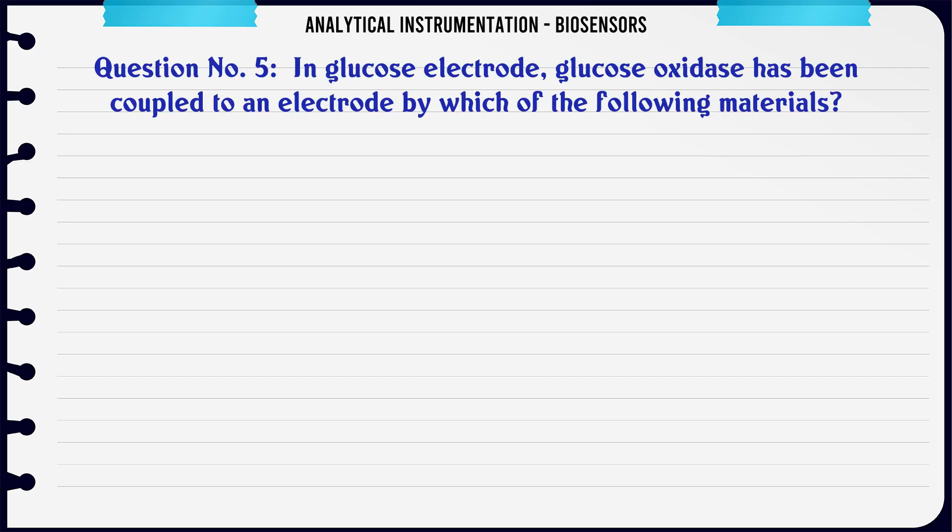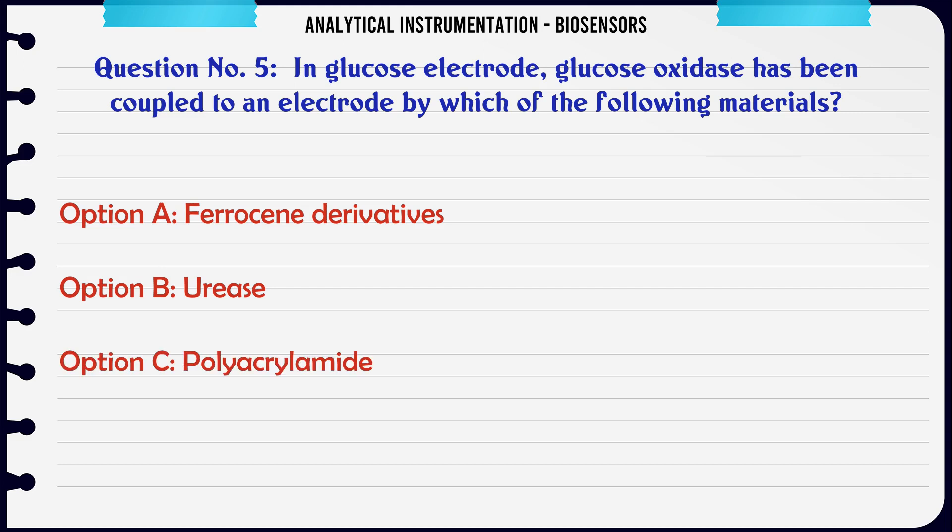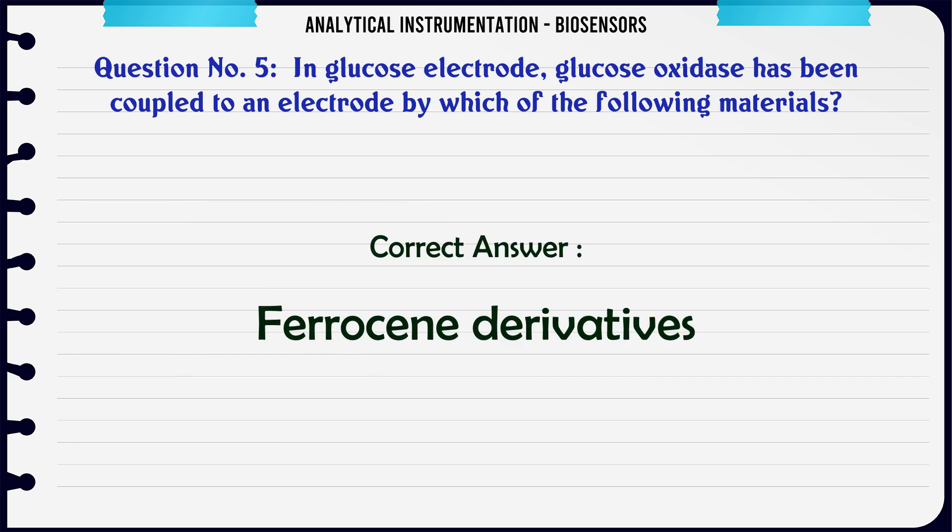In glucose electrode, glucose oxidase has been coupled to an electrode by which of the following materials? Option A: Ferrocene derivatives. Option B: Urease. Option C: Polyacrylamide. Option D: Biochips.